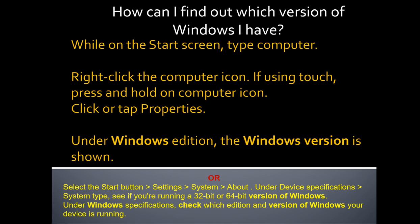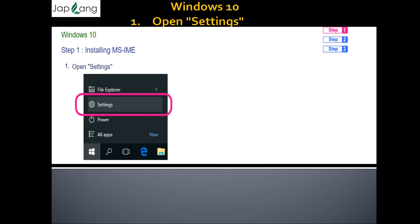Before we move to Windows 10, let's find out which version of Windows you are using. On the start screen, type 'computer', right-click the computer icon — or if using touch, press and hold — then click Properties. Under Windows Edition, the Windows version is shown. Alternatively, select the Start button, go to Settings, then System, then About. Under Device Specification, check system type for 32-bit or 64-bit, and under Windows Specification, check which edition and version of Windows your device is running.